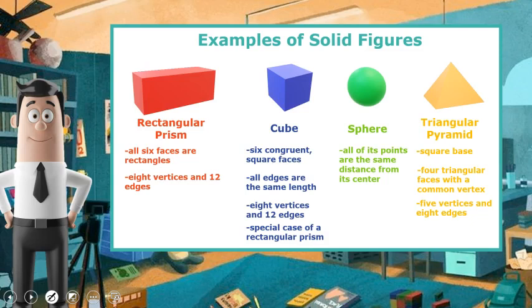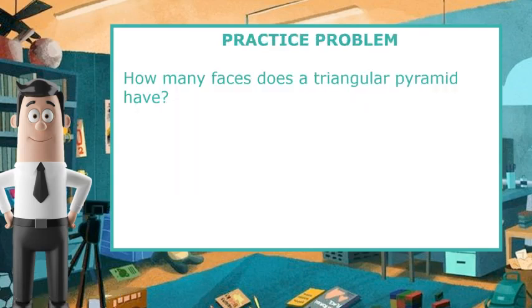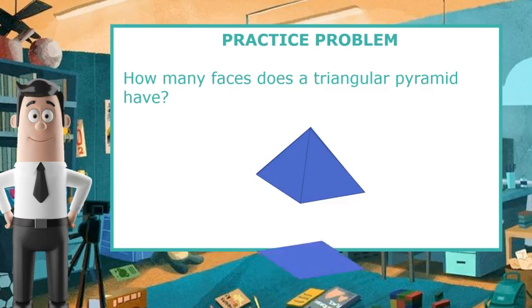Let's try this practice problem. How many faces does a triangular pyramid have? Well, let's think about building one. One, two, three, four. Four triangular faces and a square base. That makes five faces all together.